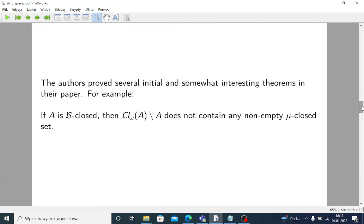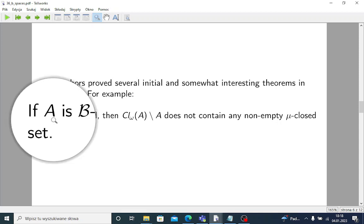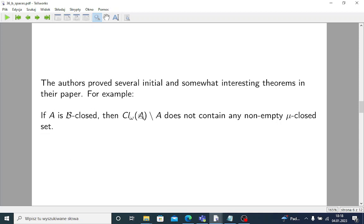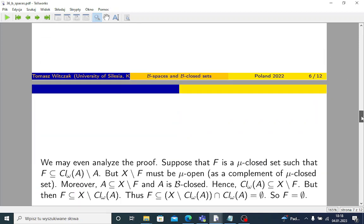The authors proved several initial and somewhat interesting theorems in their paper. For example, we have the following proposition. If A is B-closed, then the difference between omega closure of A and A, so omega closure of A minus A, does not contain any non-empty μ-closed set. We may even analyze the proof.